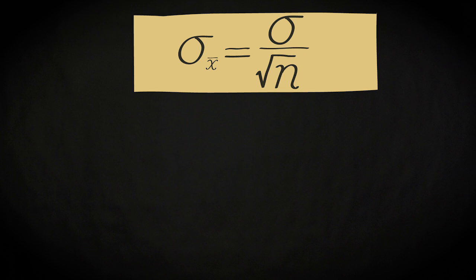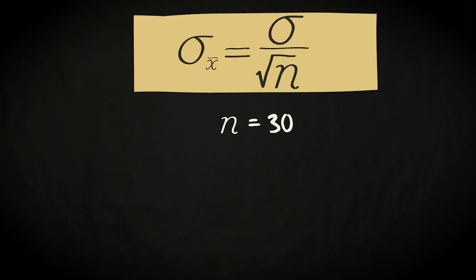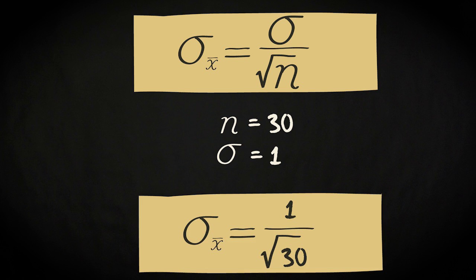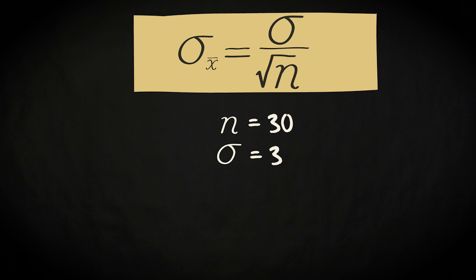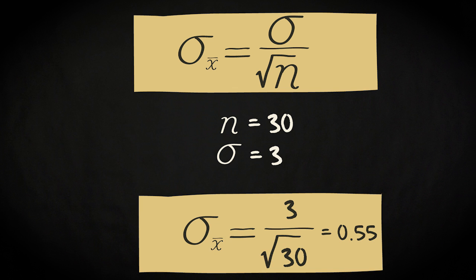This formula shows that the standard deviation of the sampling distribution is affected by two characteristics. First, it is affected by the standard deviation in the population. Assume your n is 30 and your population standard deviation is 1 — the standard deviation of your sampling distribution is 1 divided by the square root of 30, which equals 0.18. If the standard deviation in your population increases to 2, sigma x-bar becomes 2 divided by the square root of 30, which is 0.37. If sigma becomes 3, sigma x-bar becomes 0.55.